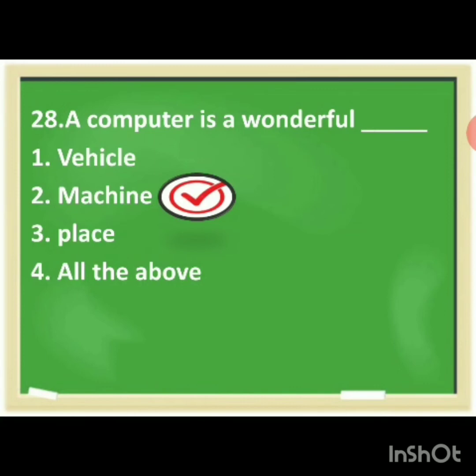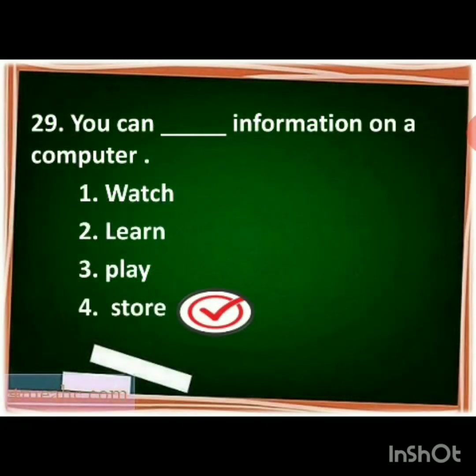The options are vehicle, machine, plays, all the above. The correct answer is machine. A computer is a wonderful machine. You have to make the tick mark for machine. You can dash information on a computer.